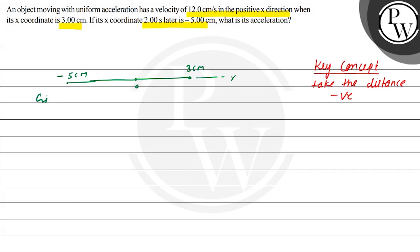If I talk about this question, I talk about given. The velocity given is positive 12.0 centimeters per second in the positive x-axis. Time given is 2 seconds. And acceleration is given... sorry, acceleration we have to find.